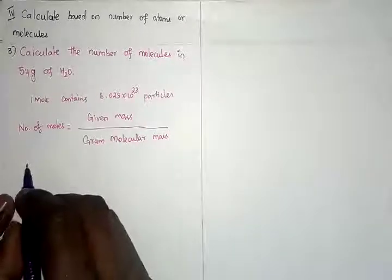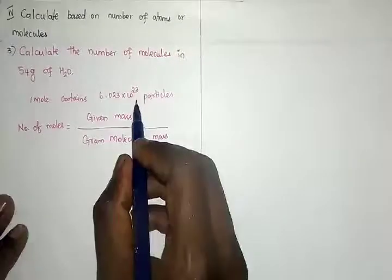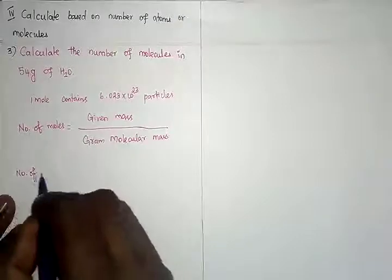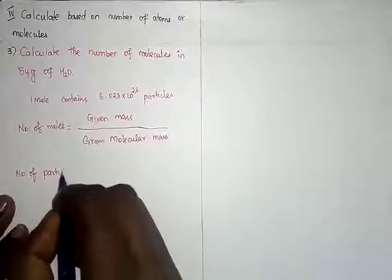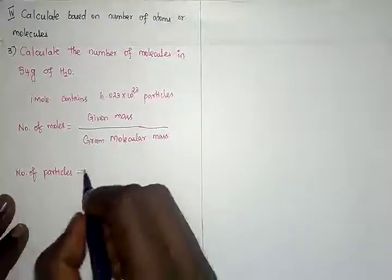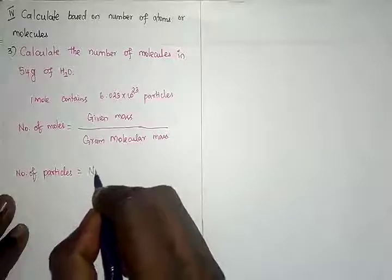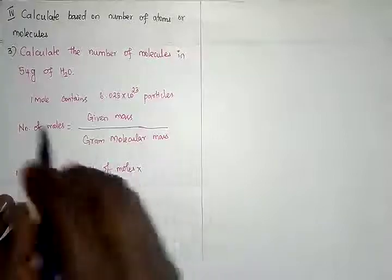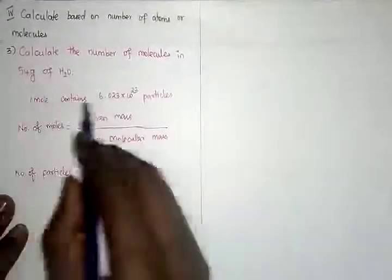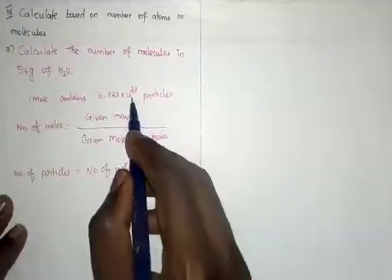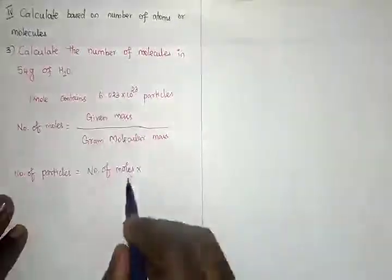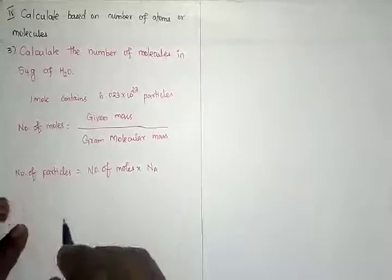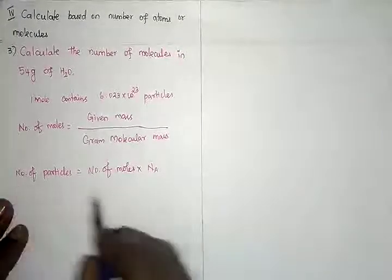Next, we need to calculate the number of particles. The number of particles is equal to the number of moles multiplied by Avogadro's number. Because one mole contains 6.023 × 10²³ particles, two moles would be two times 6.023 × 10²³, and so on.